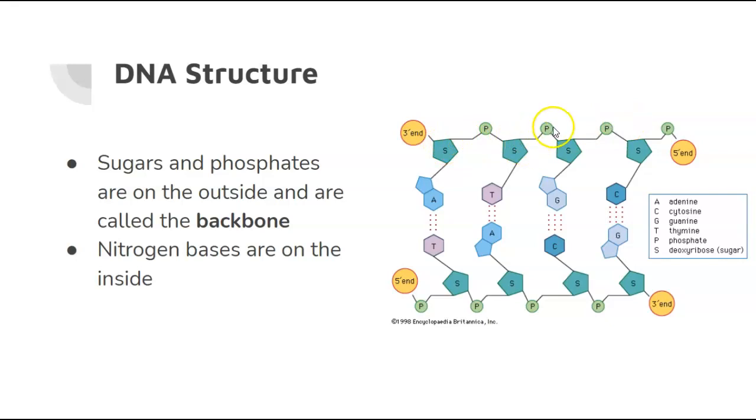And that makes up the outer ends on both sides of the DNA. And that's called the backbone. So, sugars and phosphates make up the backbone of DNA, and then the nitrogenous bases make up the inside or the rungs of the ladder.